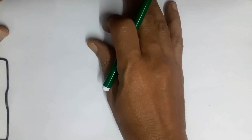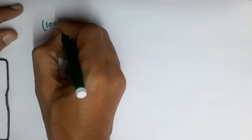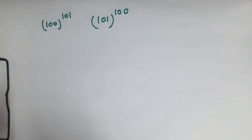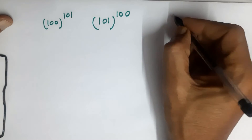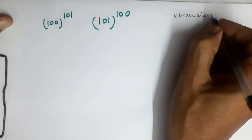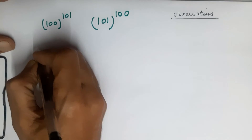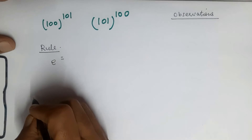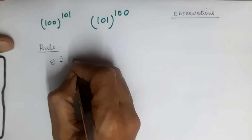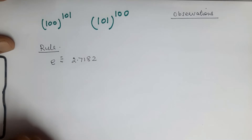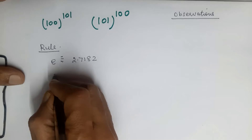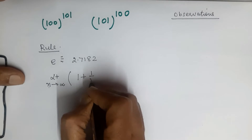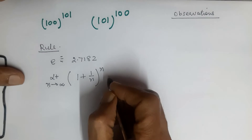First, we take some observations and a simple rule. The rule is that we know e is equal to 2.7182, and it is written as the limit as n tends to infinity of 1 plus 1 by n, raised to the power n. This is equal to e.